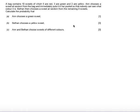In this question, we're told a bag contains 10 sweets of which 5 are red, 3 are green, and 2 are yellow. Anne chooses a sweet at random from the bag and immediately puts it in her pocket so no one can see what color it is. Bethan then chooses a sweet at random from the remaining 9 sweets.